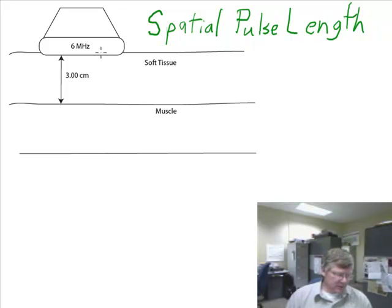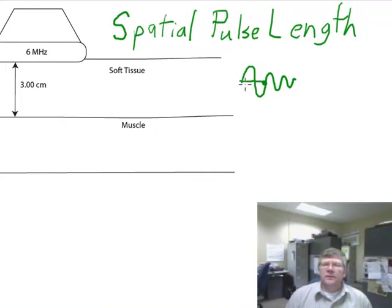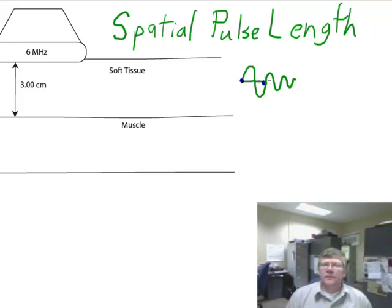When a transducer emits a pulse, it doesn't just send out a single wavelength. Usually it oscillates a few times, and the oscillation decreases until it gradually fades out. Looking at the number of wavelengths generated, we might have one full wavelength, then another, and then another. One, two, three full wavelengths before the pulse dies out completely. This is the pulse generated by the ultrasound transducer.